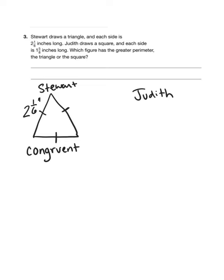And then Judith—so this is Stewart's shape that he made here—and then Judith, she made a square. Here's her—that's not a square, that is a rectangle. Let me try that again. Okay, that looks a little more square-like. Judith draws a square and each side of her square is one and five-eighths of an inch long. Which figure has the greater perimeter, which is the distance around the outside edge of the shape? Which figure has the greater perimeter, the triangle or the square?